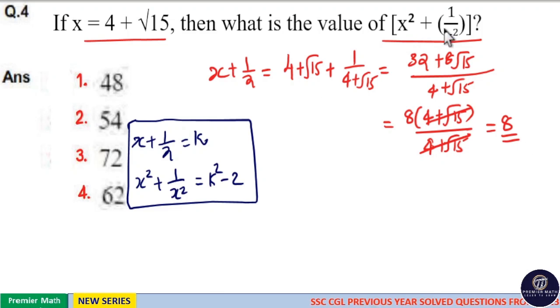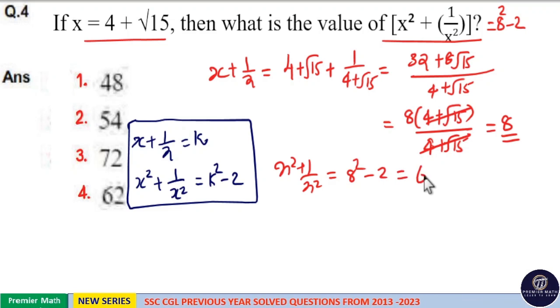Then x square plus 1 by x square is equal to 8 square minus 2, which is equal to 64 minus 2, which is equal to 62. Option 4 is your answer.